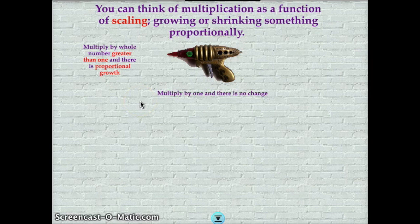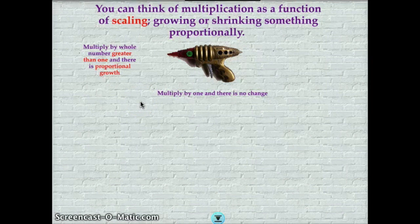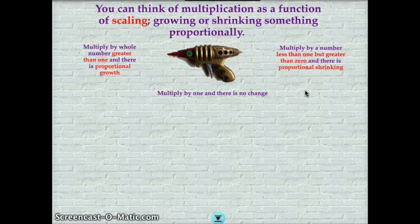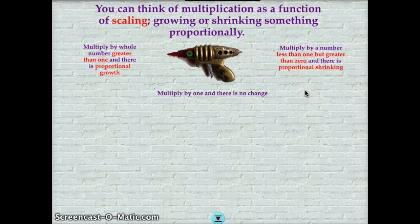This also explains why when we multiply by one, there's absolutely no change at all, and why when we multiply by a number less than one but greater than zero, there's proportional shrinking. It makes sense. Yay, multiplication, our magical scaling ray.